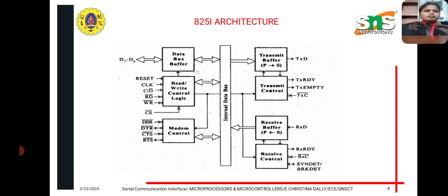In the transmitter section, we have the transmitter buffer and transmitter control, which controls activities and converts parallel data to serial. In the receiver section, serial data is converted to parallel. Both the transmitter and receiver sections have a clock to generate clock signals, and signals to indicate readiness to transmit or accept data.